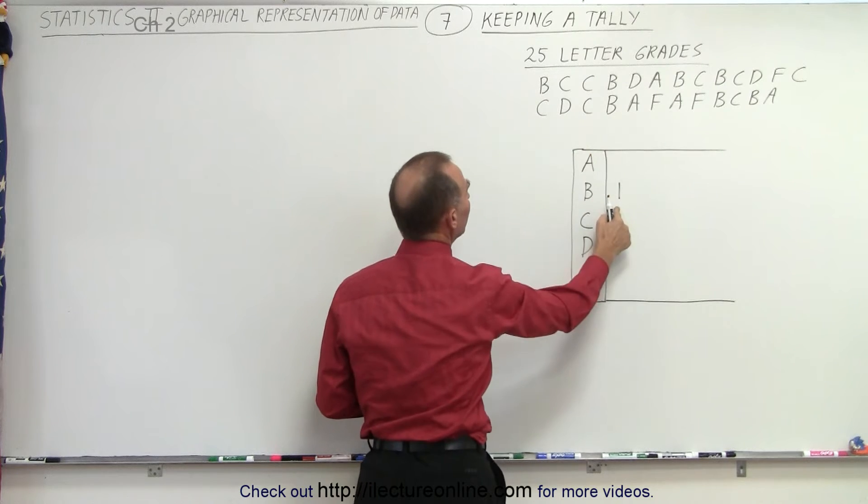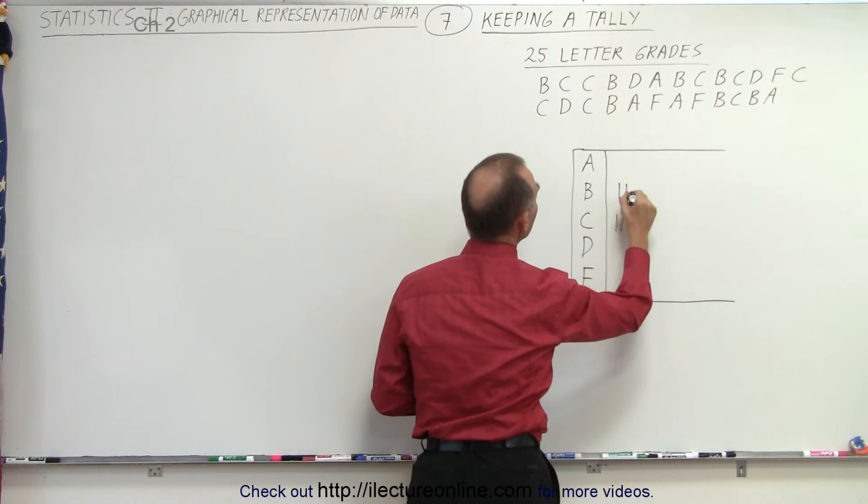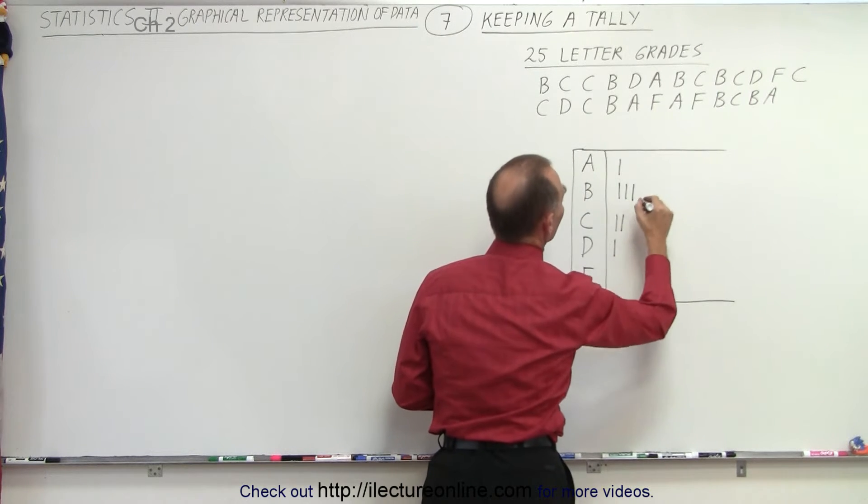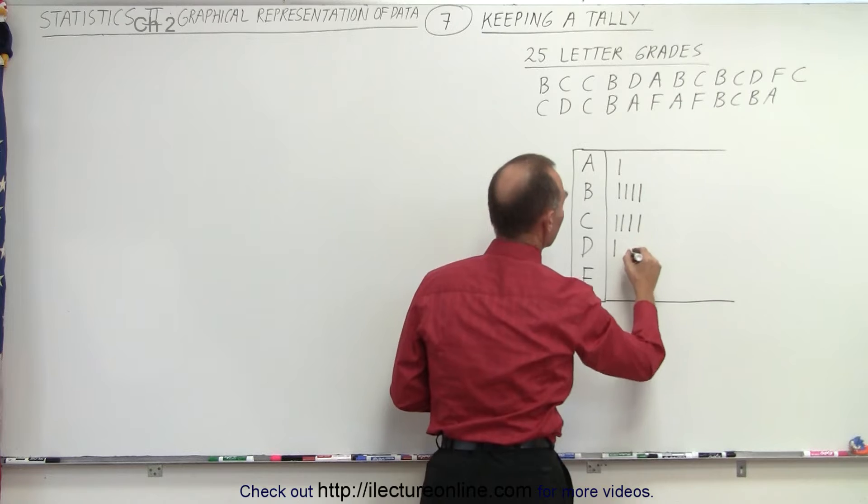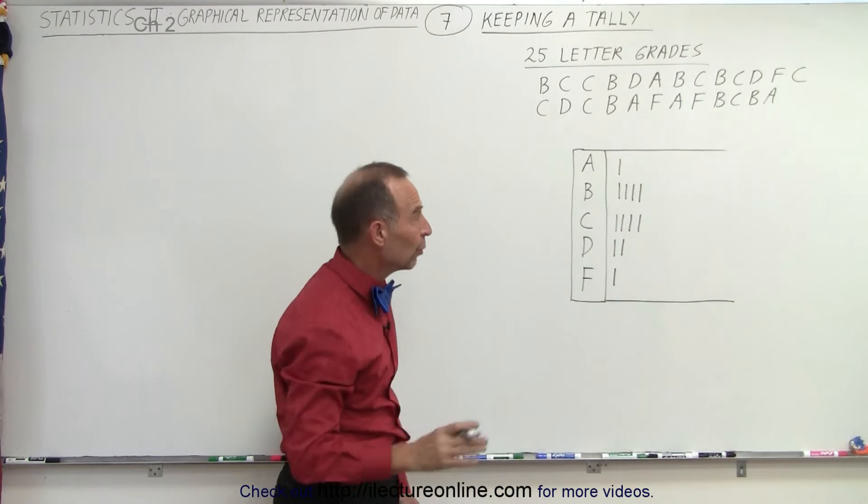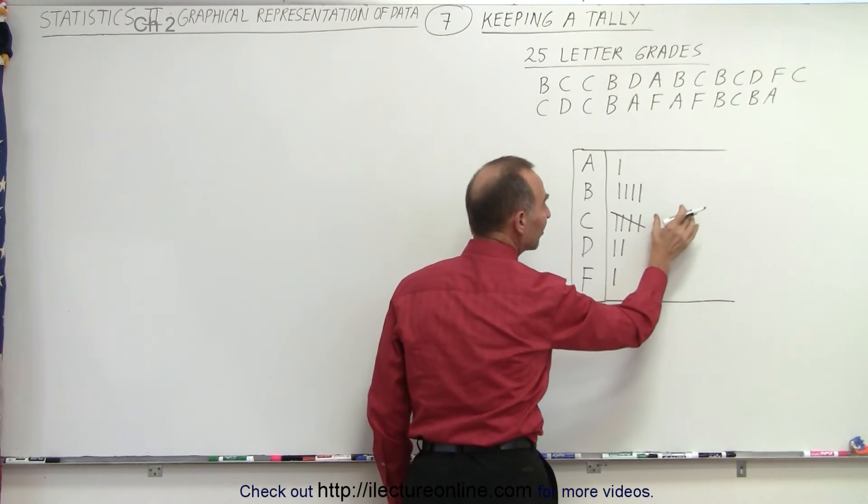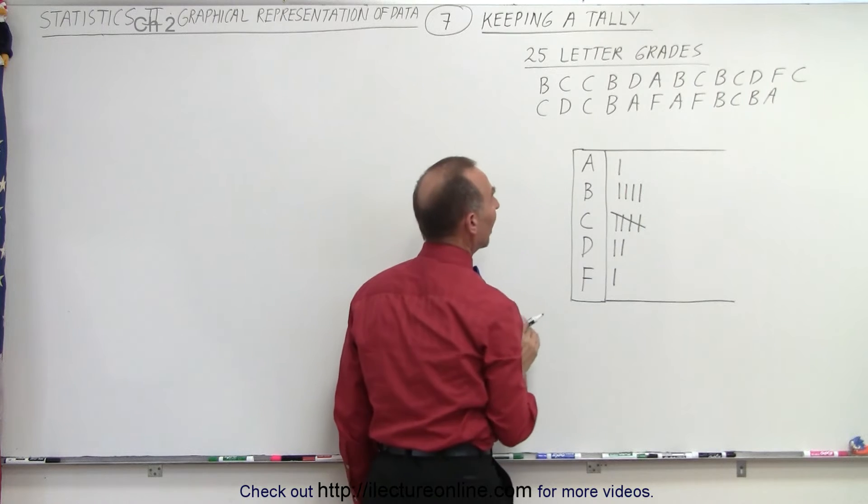So for B I have one B here. I have a C, another C, another B, a D, an A, a B, a C, another B, another C, a D, an F, and a C. Now that would be my fifth C. What you do then is you simply draw a line across like that. That gives us five and that way it's easy to see how many fives you have.